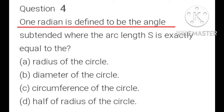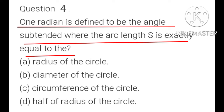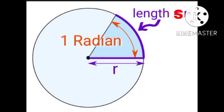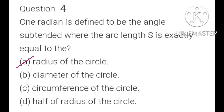Question 4: One radian is defined to be the angle subtended where the arc length S is exactly equal to: A) radius of the circle, B) diameter of the circle, C) circumference of the circle, D) half of the radius of the circle. If the arc length S equals the radius of the circle, then the angle is known as one radian. So A is the correct option: one radian is defined where arc length S equals the radius of the circle.